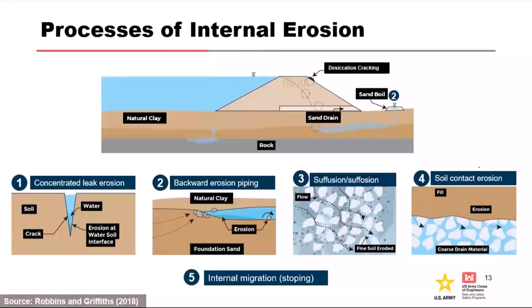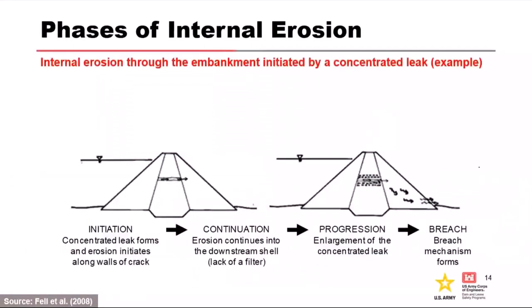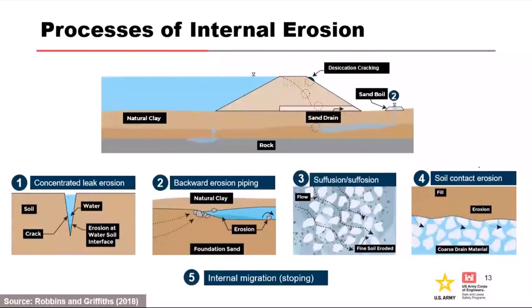The general categories of processes are: concentrated leak erosion (CLE), backward erosion piping (BEP), suffusion and suffosion — very similar with a nuanced difference — soil contact erosion, and internal migration, which we also call stoping. CLE and soil contact erosion are also referred to as scour. Four of these processes are mentioned in ICOLD Bulletin 164, which focuses on internal erosion. Internal migration or stoping was added by the federal agencies. The USACE added the term 'soil' in front of 'contact erosion' because we want to think about this process as occurring at the contact between fine and coarse material.